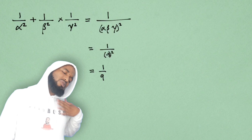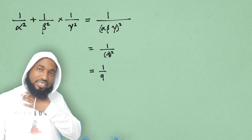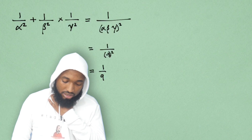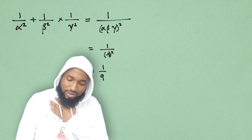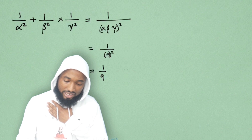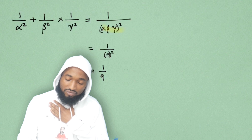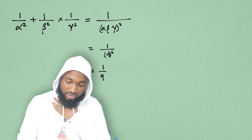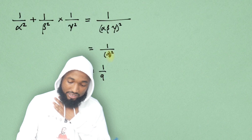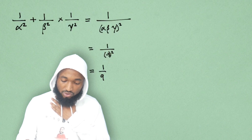The last one — the product of the roots is something easier because we just multiply them. So in the end you're left with alpha beta gamma, all squared. We know what that is. Substitute.